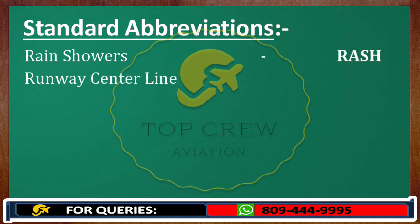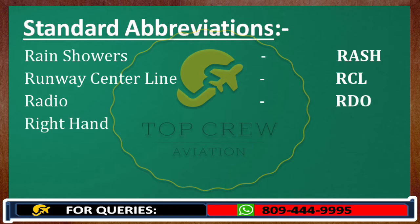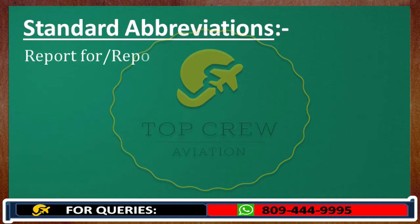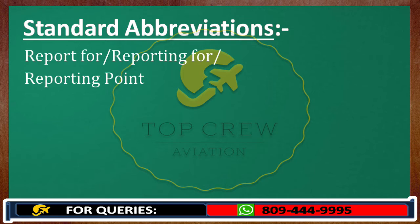Runway centerline: RCL. Radio: RDO. Right hand: RH. Runway edge light: REDL. Registration: REG. Report or reporting point: REP.